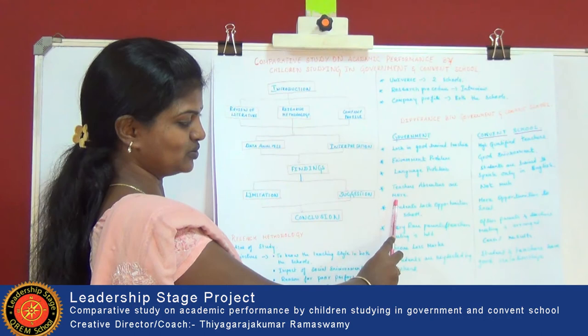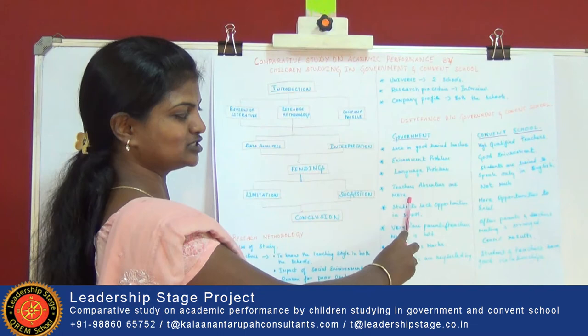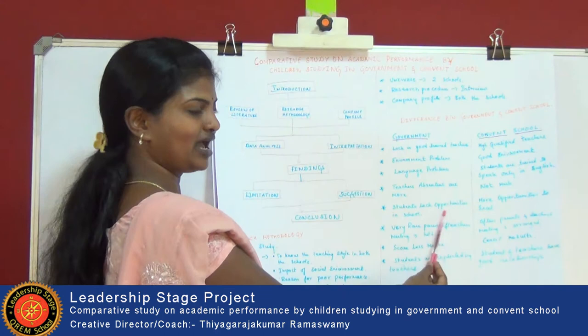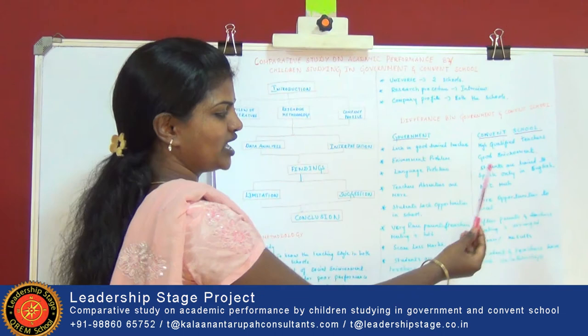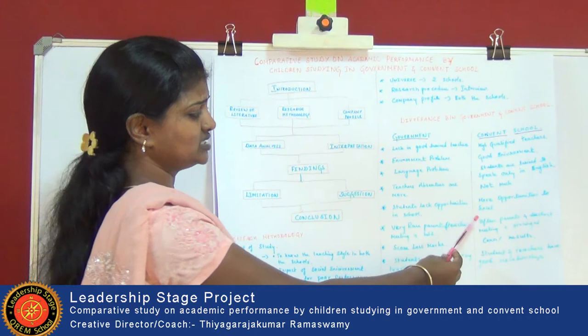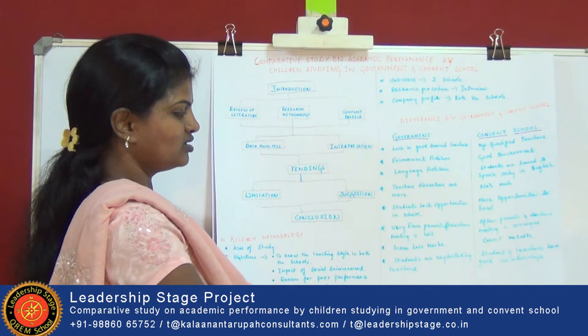Teacher absenteeism is more in government schools and teachers are not bothered about their schools, because the salary is provided by the government and rules and regulations are not followed. Students also lack opportunity in government schools as they are not able to develop their talents and interests in any field, whereas convent schools provide more opportunity to excel in academics, sports, dance, and other activities. Parent-teacher meetings are very rarely held in government schools, but are often held in convent schools.